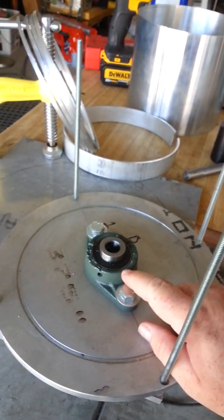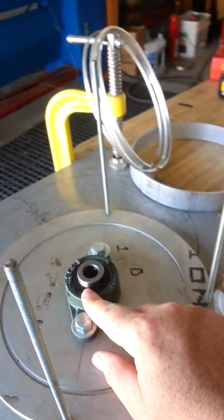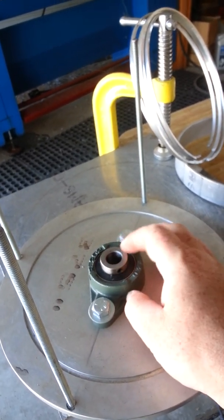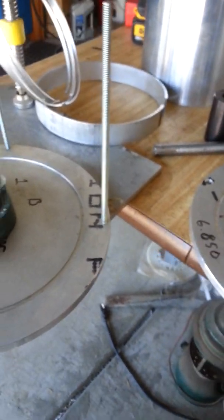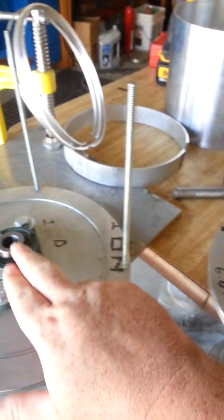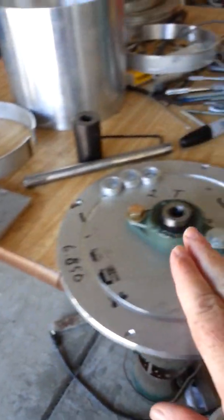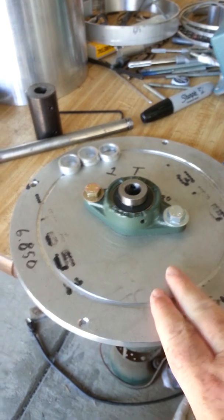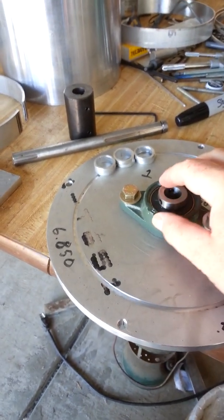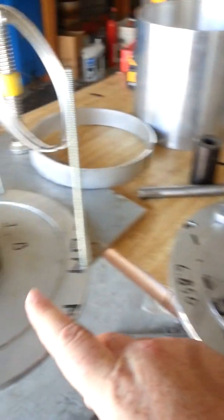We have the flange bearing, two bolt flange bearing, with set screws in them. We'll have two of those, one for the bottom plate, one for the top plate. As you can see the top plate has the bearing mounted on like the bottom plate.